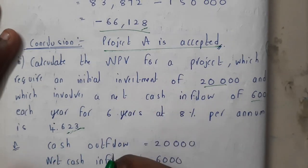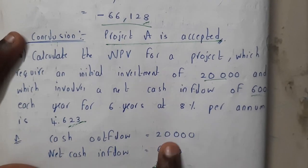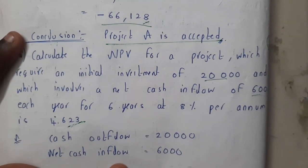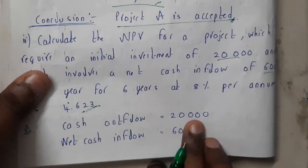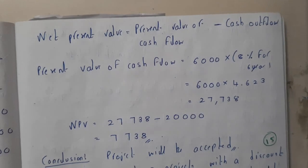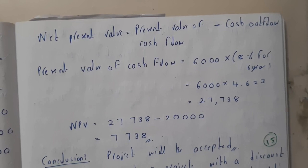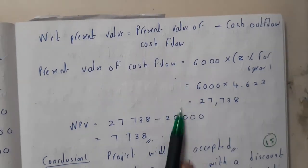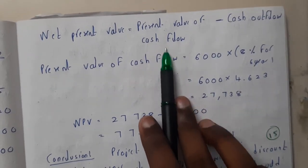He didn't give any table; he gave the values indirectly in words. So the cash outflow is 20,000, which we need to invest, and the net cash inflow is 6,000 per year. He gave all the values in the question itself. We need to find the net present value. The formula is: present value of cash inflow minus cash outflow.